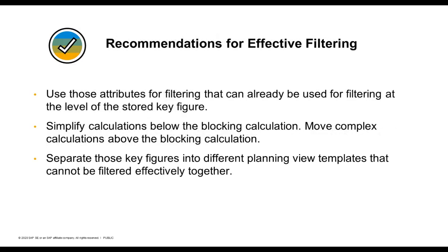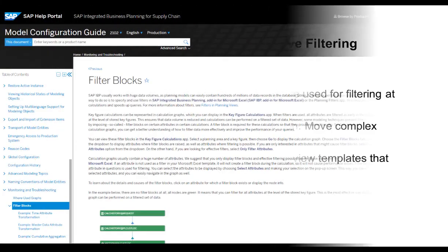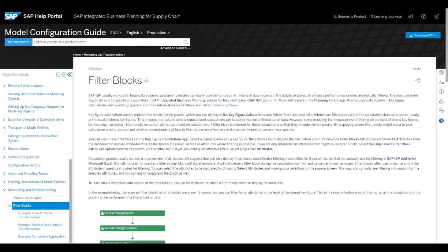As mentioned before, filter blocks, though they might cause performance issues, are required for functional correctness. However, there are a few tips and tricks to improve performance and speed up your queries. First, use those attributes for filtering that can already be used for filtering at the level of the stored key figure. Then, consider simplifying the calculations below the calculations that impose filter blocks, and try moving complex calculations above the blocking calculations. Finally, separate those key figures that cannot be effectively filtered, and thus queried together, into different Planning View templates. For more information and examples of filter blocks and effective filtering, check out the Filter Blocks section under Monitoring and Troubleshooting in the Model Configuration Guide.